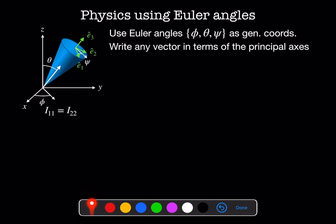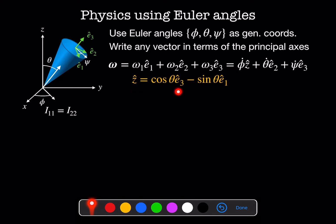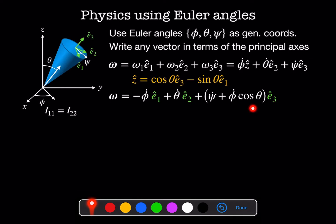Since this is an orthonormal system, we can write any vector in terms of our directions E1, E2, and E3. In this coordinate system, our total angular velocity is given by omega1 in the E1 direction, omega2 in the E2 direction, and omega3 in the E3 direction. From the definition of our Euler angles, we can also write the total angular velocity as phi dot in the Z direction, theta dot in the E2 direction, and psi dot in the E3 direction. We express the Z direction in terms of our body frame: Z-hat equals cosine theta in the E3 direction minus sine theta in the E1 direction. So the three components of the angular velocity vector in terms of the principal axes are minus phi dot in E1, plus theta dot in E2, and psi dot plus phi dot cosine theta in E3.